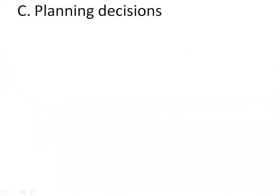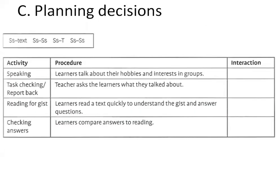Next are planning decisions. The first thing to consider is the interaction patterns you want in your lesson. It's important that your lesson represents a variety of interaction patterns. What are interaction patterns? They are: students to text, students to students, students to teacher — this is who the students are interacting with. For example, the first activity is a speaking activity where learners talk about their hobbies in groups, so the interaction pattern is definitely students to students.